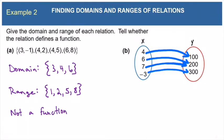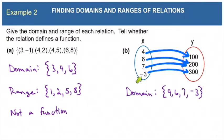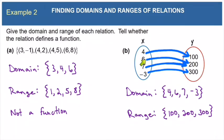Now let's look at relation B, which uses the mapping notation. In the first ring we have all the x values, and in the second ring we have all the y values. The x value of 4 matches a y value of 100, 6 matches 200, 7 also matches 200, and negative 3 matches 300. So the domain is {4, 6, 7, -3} and the range is {100, 200, 300}. This is a function because each x value is only mapping to one y value.